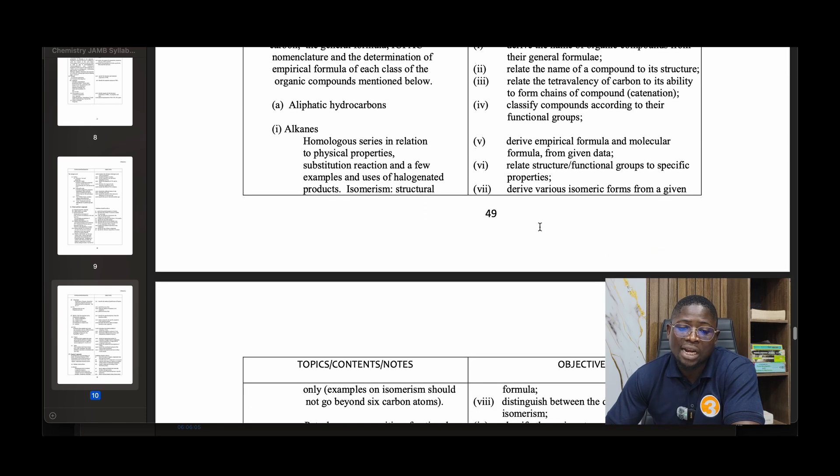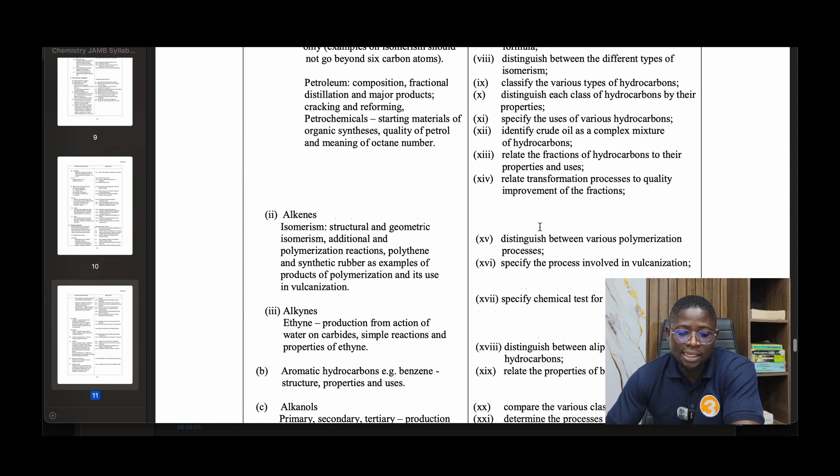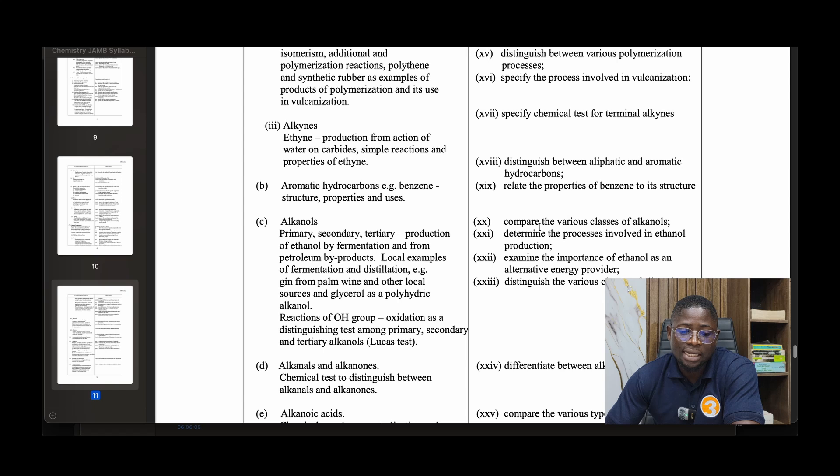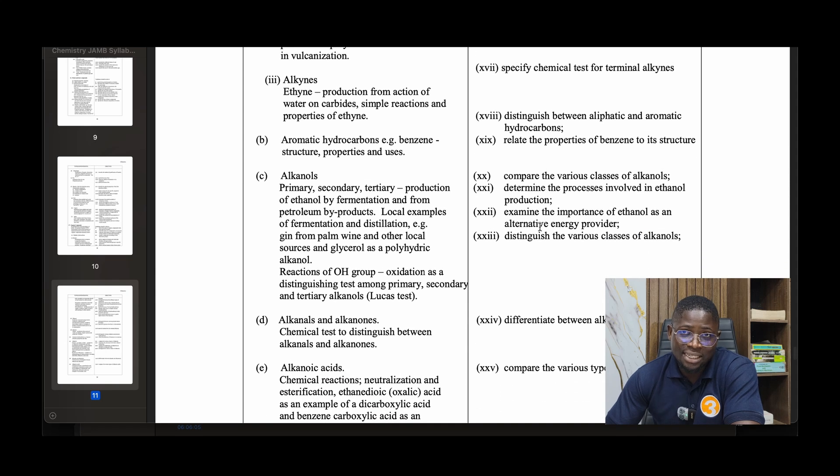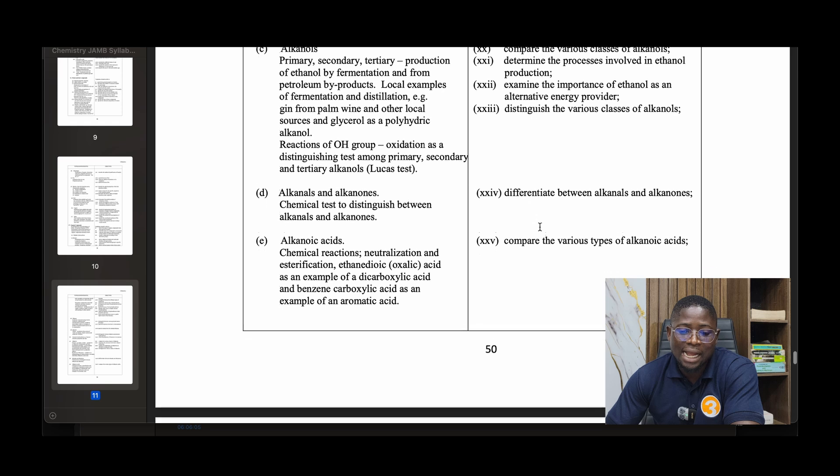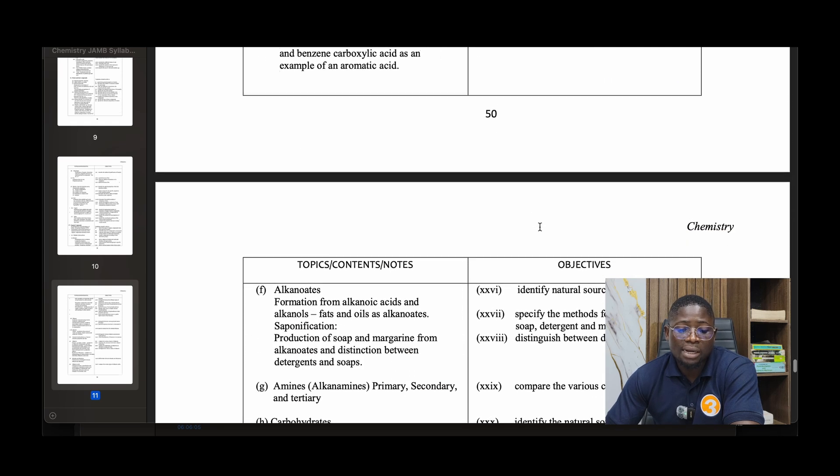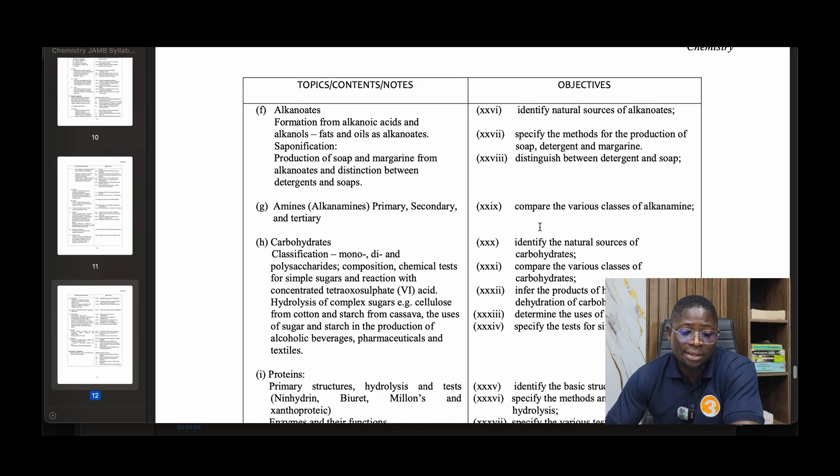Number eighteen: Organic compounds. Introduction to the tetravalency of carbon, general formulas, IUPAC nomenclature, and determination of empirical formulas of each class. Aliphatic hydrocarbons: alkanes, alkenes, alkynes. Aromatic hydrocarbons: benzene structures, properties, and uses. Alkanols, alkanals, alkanones, alkanoic acids, alkanoates, amines.